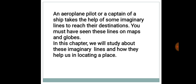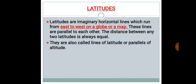So first is the latitude. Latitudes are imaginary horizontal lines which run from east to west on a globe or a map. These lines are parallel to each other. The distance between any two latitudes is always equal.